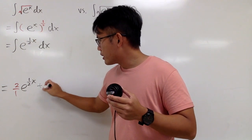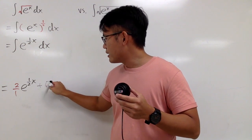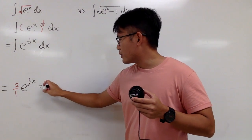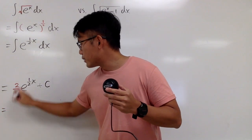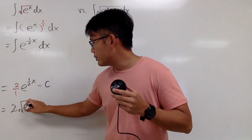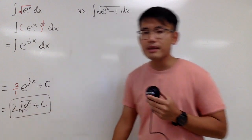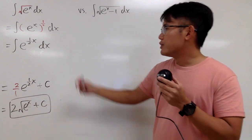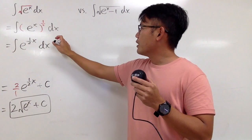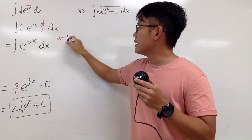This is pretty much it — plus c. If you would like, you can write this down as the original expression with the square root: 2 times the square root of e to the x, plus c. Just quickly, let me show what I mean. You can always write u equal to (1/2)x, which is the input.